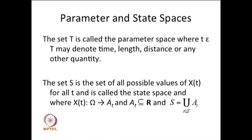X(t) is a random variable from Ω into Aₜ, where Aₜ is a subset of ℝ. The Aₜ's are contained in the real line, and S is the union over t belonging to capital T of all the Aₜ's, which forms the state space. For a fixed t you have the collection of possible values Aₜ, and taking the union over all t gives the state space. All possible values of small t belonging to capital T form the parameter space.